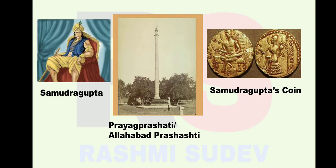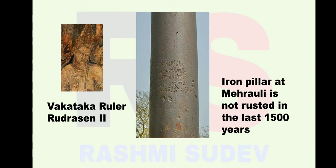After Samudragupta, his son Chandragupta II took the throne and ruled the Gupta kingdom. Chandragupta II extended his empire to the northwest and also won and merged Malva, Gujarat, and Saurashtra. He made good relationships with south Indian kings known as Vakataka rulers.